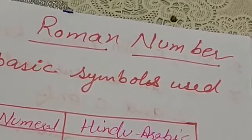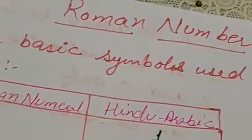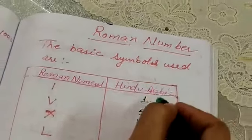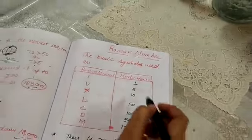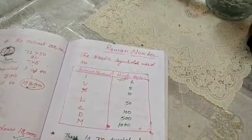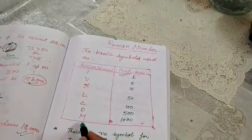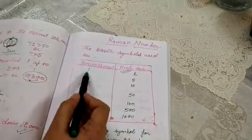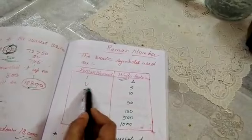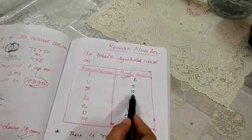We have symbols for writing 1, 2, 3, 4 — these numbers are called Hindu-Arabic numbers. In Roman numbers, we give alphabets to them. So if we write I, that means it is 1. If we write V, that means it is 5. If we write X, that means it is 10.